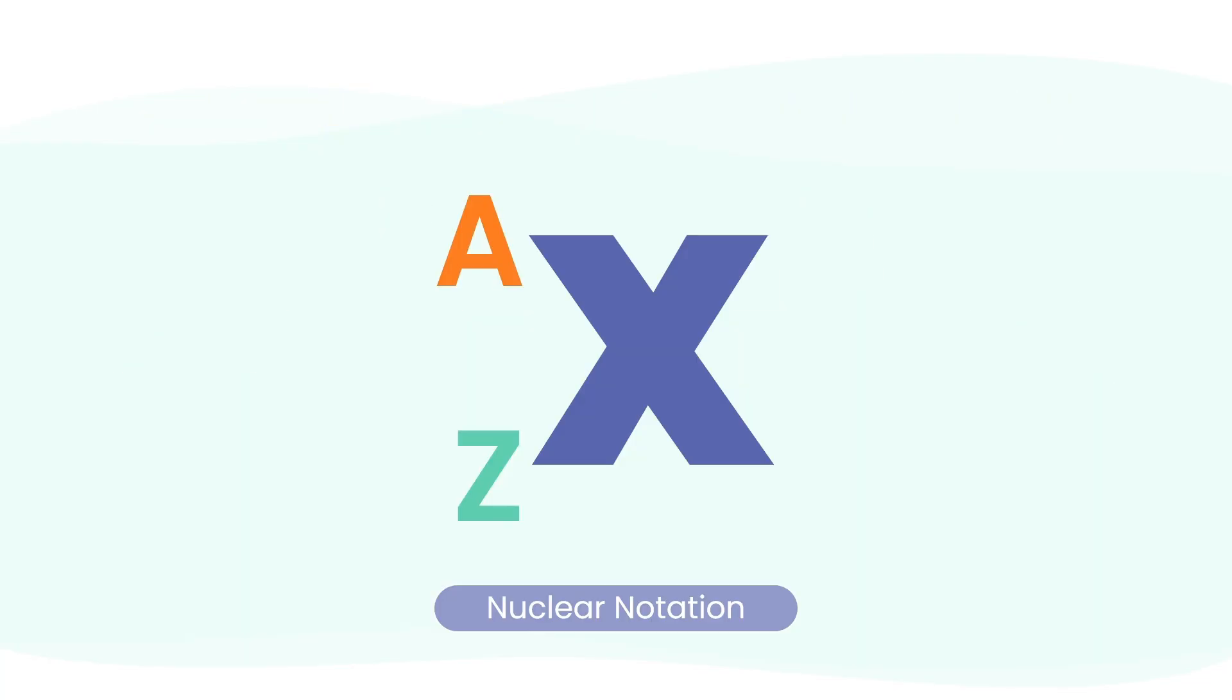Here's how isotopes are often written, using a special shorthand format called nuclear notation. You'll see something like this: X, A, Z. Here, X is the element's symbol, a quick way to identify the element.